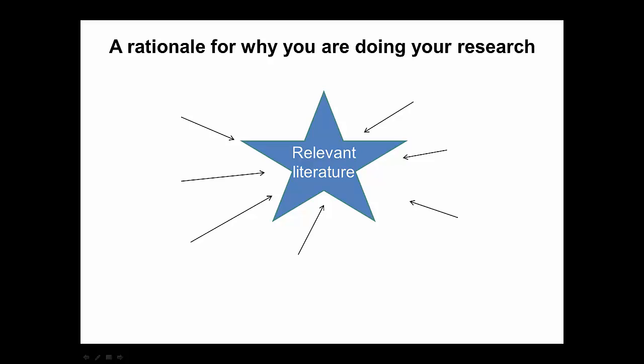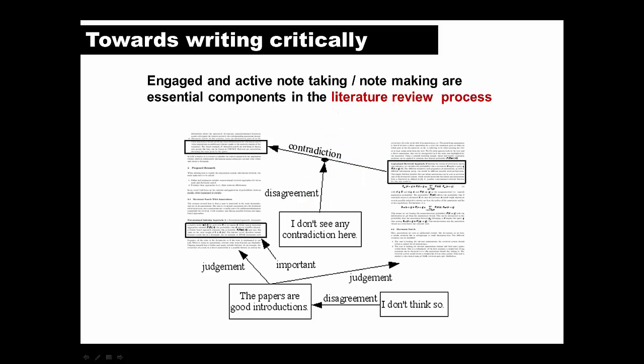One feature of a good literature review is that it only focuses on relevant literature. A good quality literature review also starts with effective and thoughtful note-taking and note-making. You begin thinking critically about your topic once you start annotating what you read — that is, questioning and thinking deeply about what you're reading. Your annotations may include contradictions you find in different authors' interpretations, questions that the articles have left unanswered, and points you agree or disagree with and think crucial to include in your review.